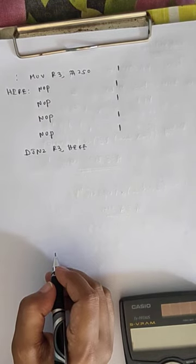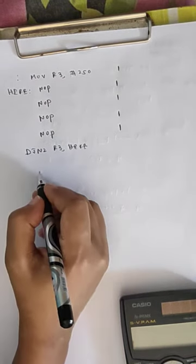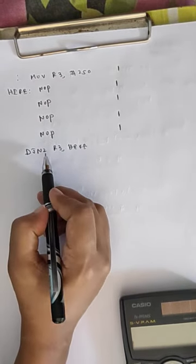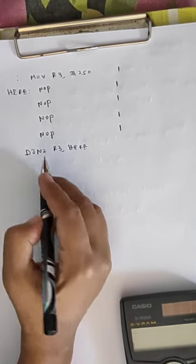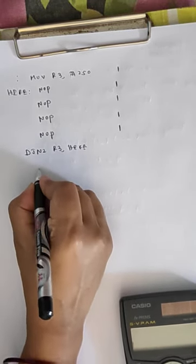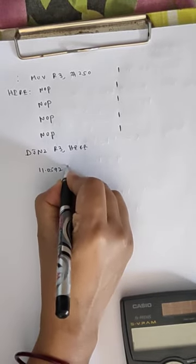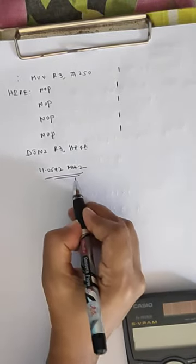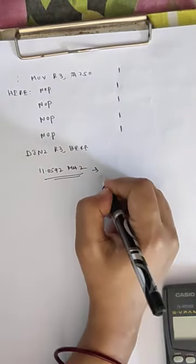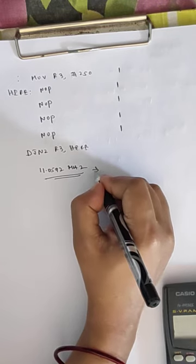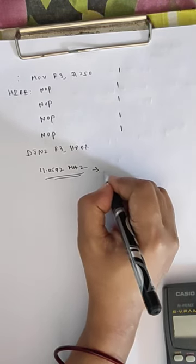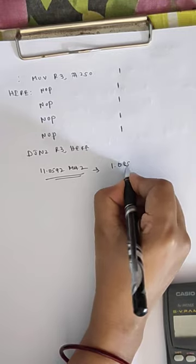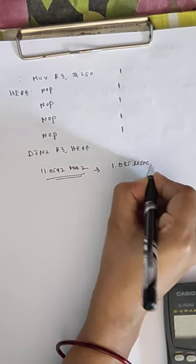For this example we will calculate the delay. The frequency of the crystal oscillator used in this system is assumed to be 11.0592 MHz. For this given frequency, the time required for one machine cycle is 1.085 microseconds.